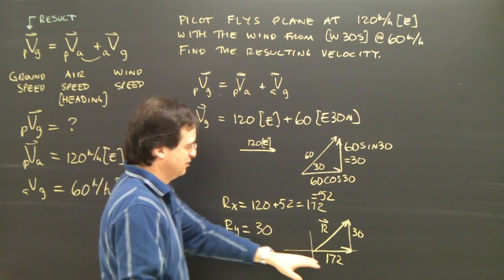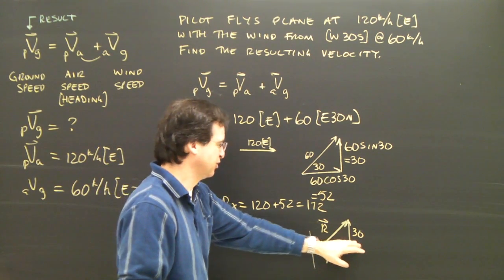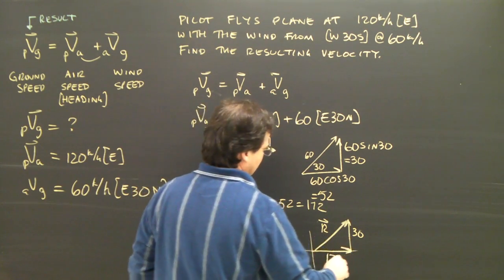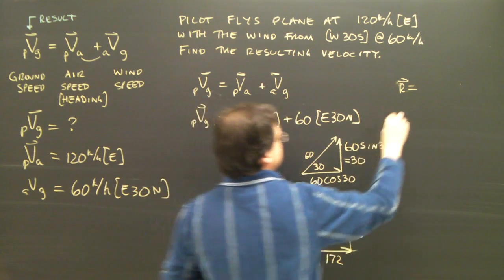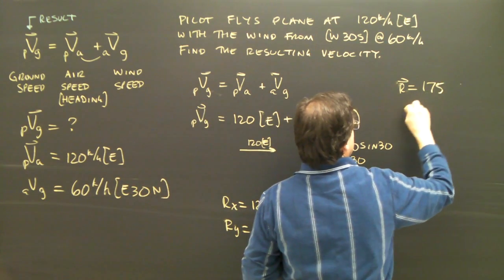To find that resultant, you take 172 squared plus 30 squared, take the square root. And I'm just going to give that to you. The resultant is 175.